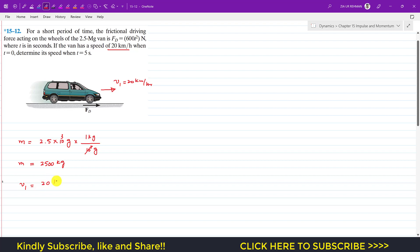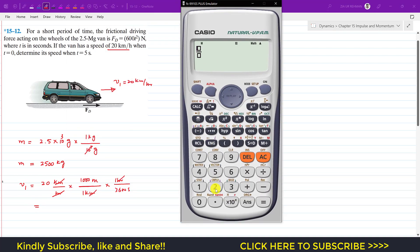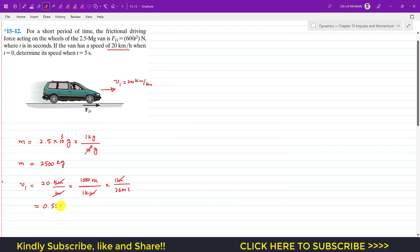So this is 20 km/h. As we know, 1 km equals 1000 meters and 1 hour is 3600 seconds. This will cancel out and we will be left with meters per second. So when we multiply 20 with 1000 divided by 3600, this gives us 5.556 meters per second. This is v₁ in meters per second.